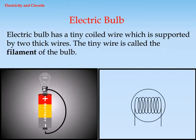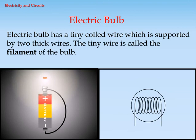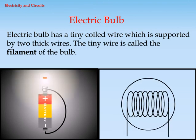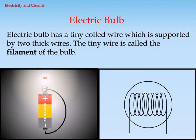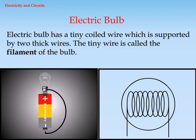Electric bulb. An electric bulb has a tiny coiled wire which is supported by two thick wires. The tiny wire is called the filament of the bulb.